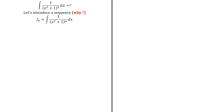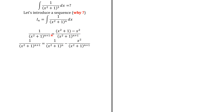Let's start with the integrand of I_{n+1}. Focus on 1 over (x² + 1)^{n+1}. We just rewrite 1 as (x² + 1) − x². So we can separate this into one term giving I_n, and a second term with x² over (x² + 1)^{n+1}. That second term seems to be the issue, but we will see how to deal with it.